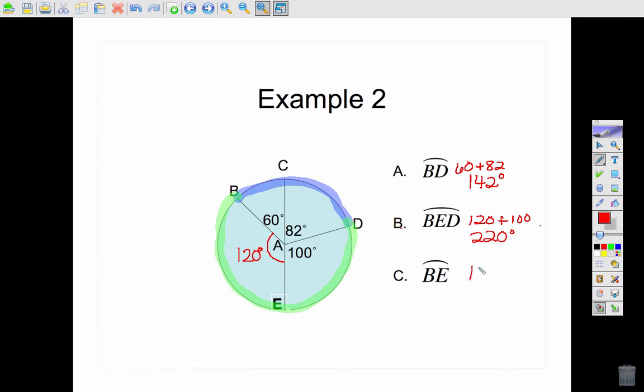And lastly, the BE, which we already found, it's the red that we just marked, so that is 120.